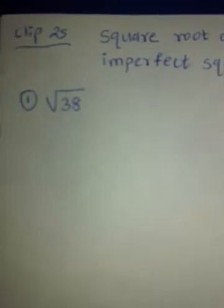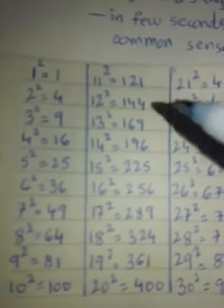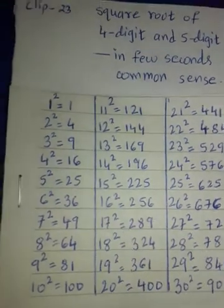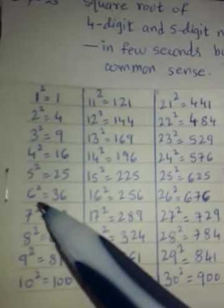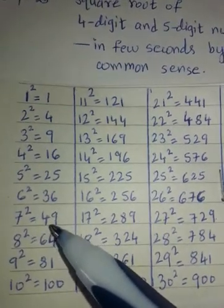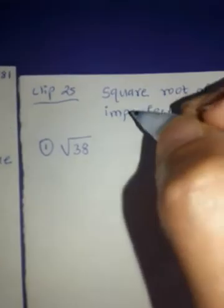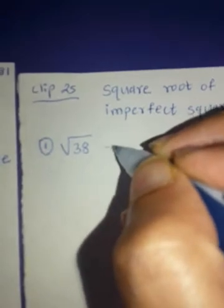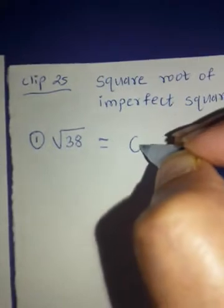Square root of 38. 38 lies between 36 and 49. Isn't it? We need the square root of 38. So it's going to be more than 6, that is for sure. But it's going to be less than 7. So here what I am going to write. First I will write 6. It's going to be more than 6 but less than 7. So I am writing here 6.